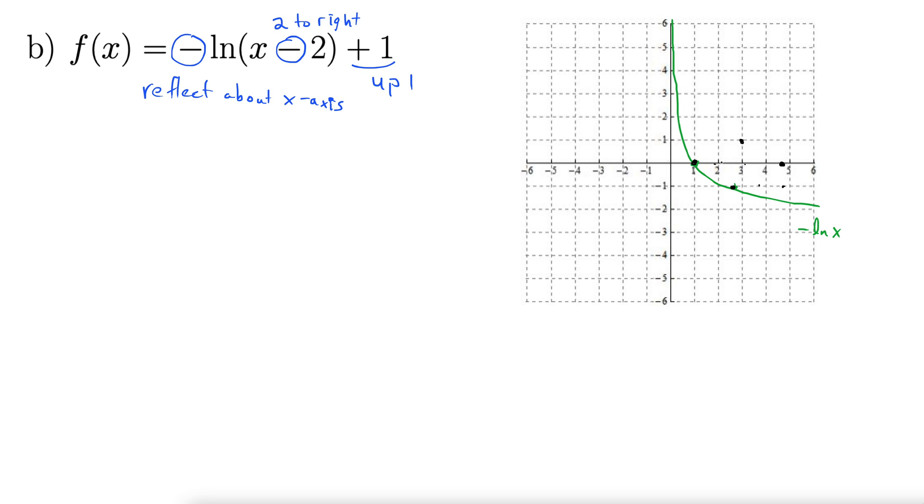And the last thing you do is you take this asymptote here. This is just the y-axis, but it's also an asymptote. And we're going to shift it two to the right and one up. So one, two, two to the right and one up. Well, one up is hard to tell what that does with an asymptote, but two to the right really makes a difference.